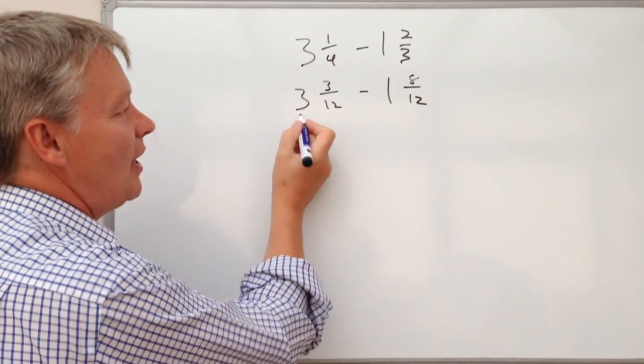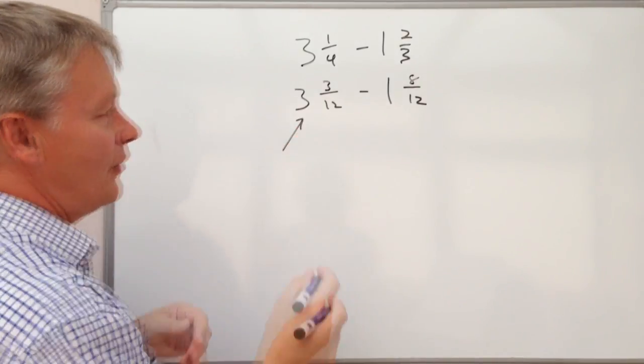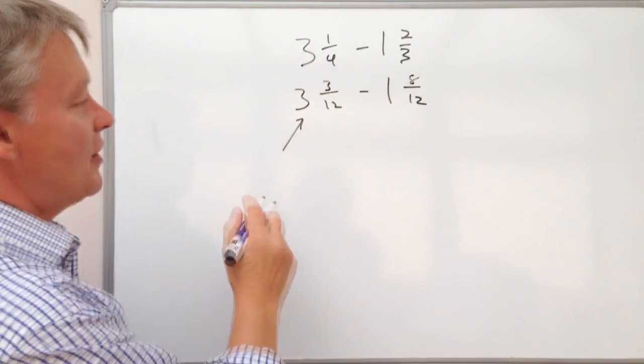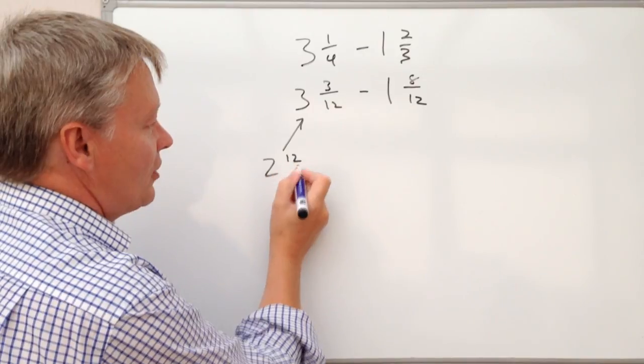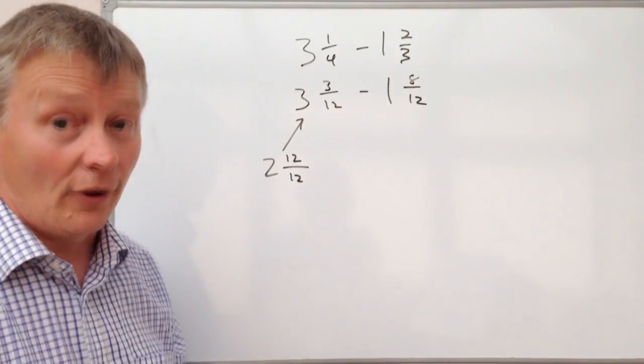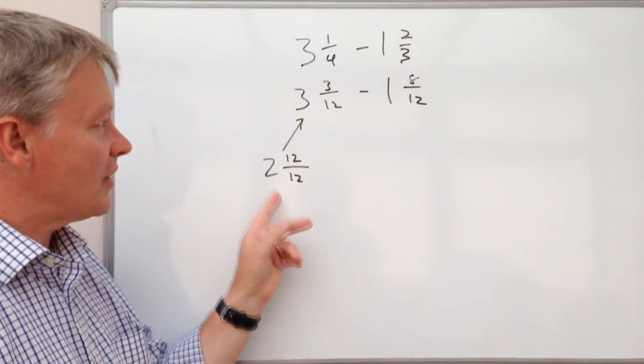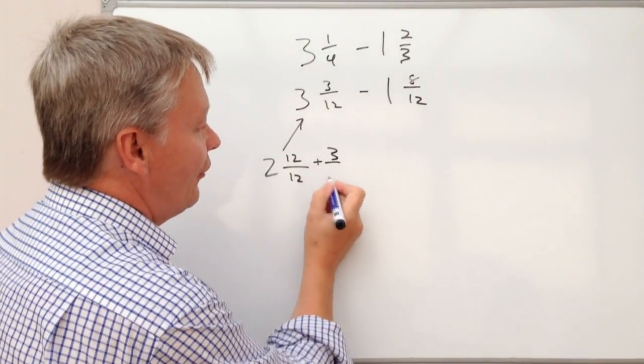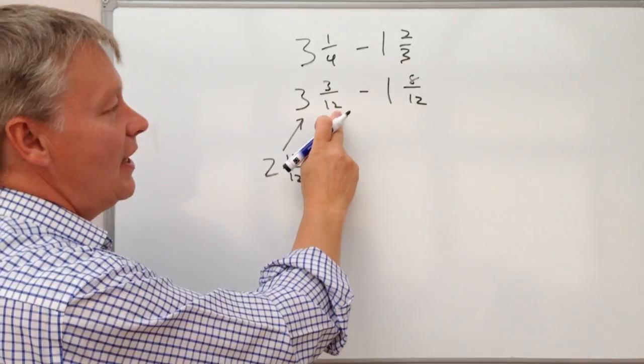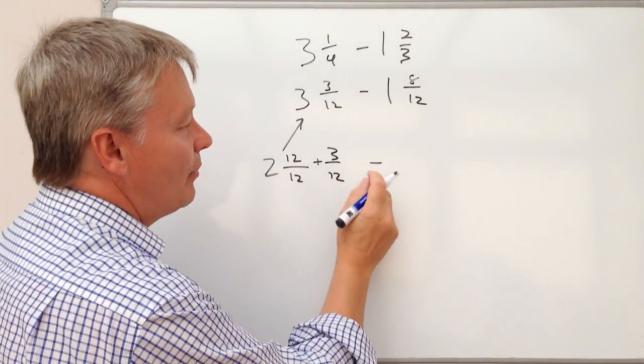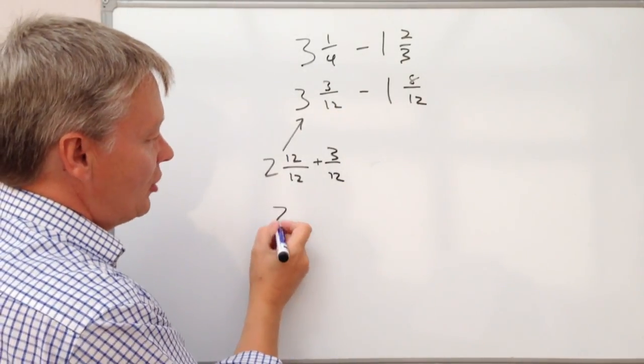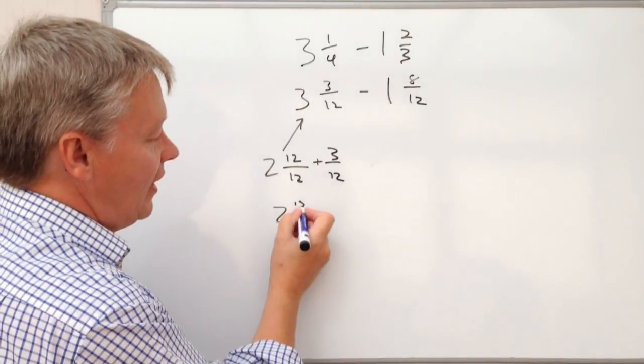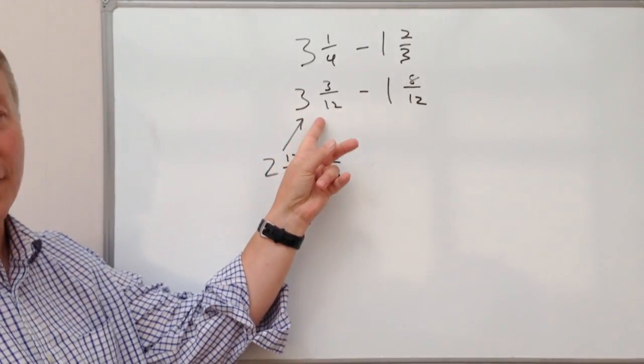So what I'm going to do is I'm going to make that 3, if you just completely ignore everything else, that 3, I'm going to make 2 and 12/12, so therefore that's going to be exactly the same as 3. But if I add that to the 3/12 which I've got here, then I'm going to be in a position to make it 2 and 15/12, which is exactly the same as this one.